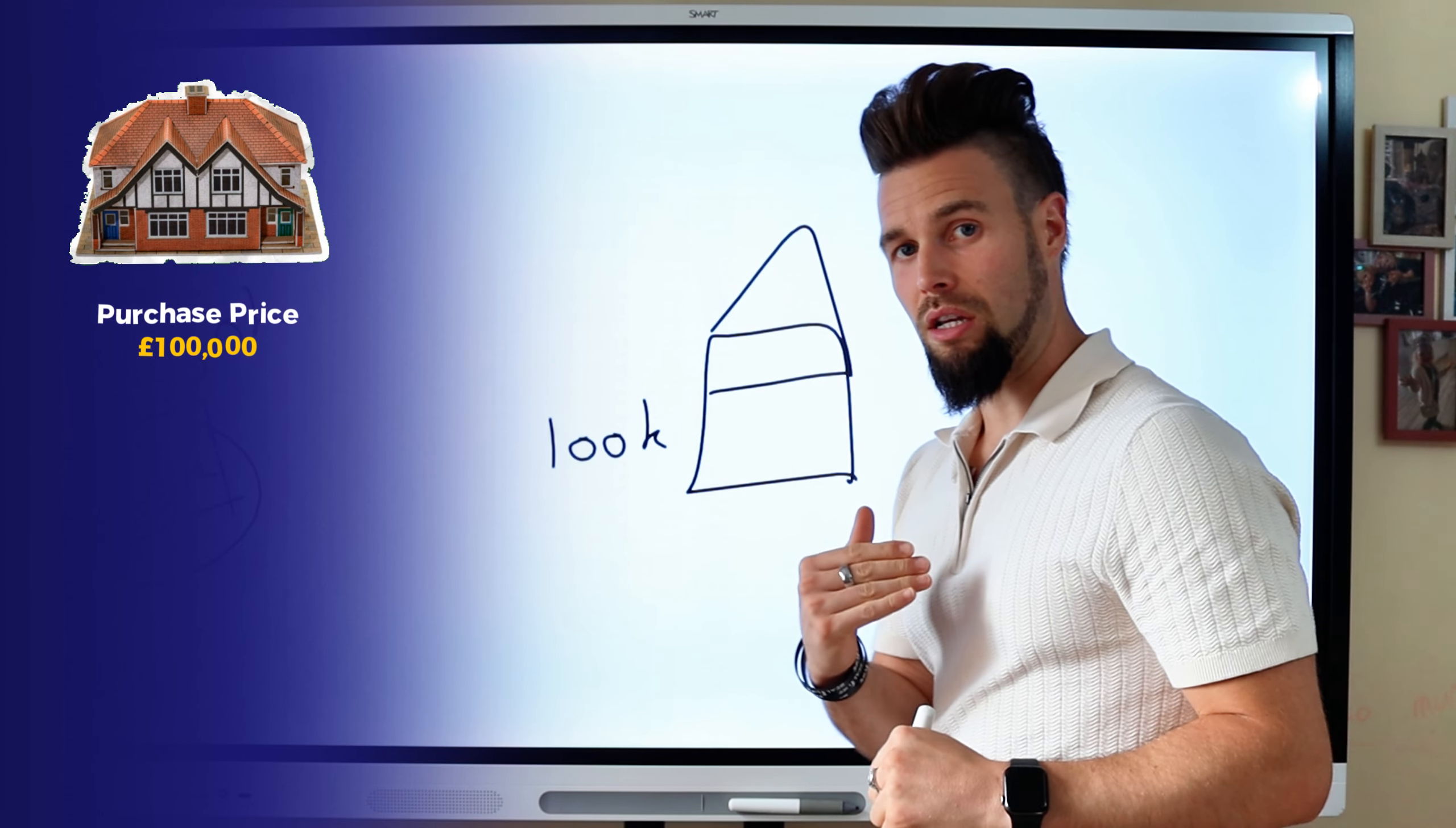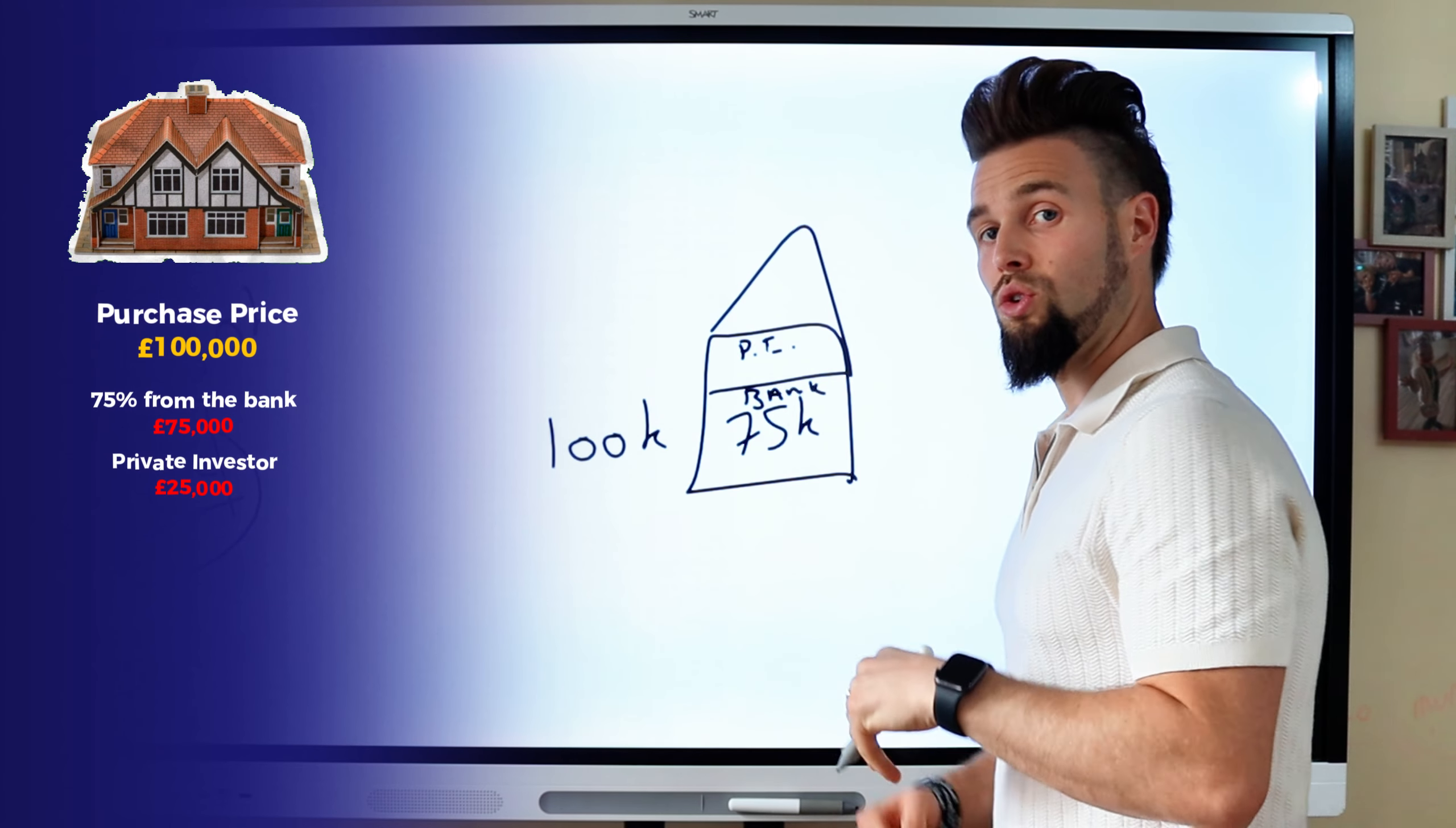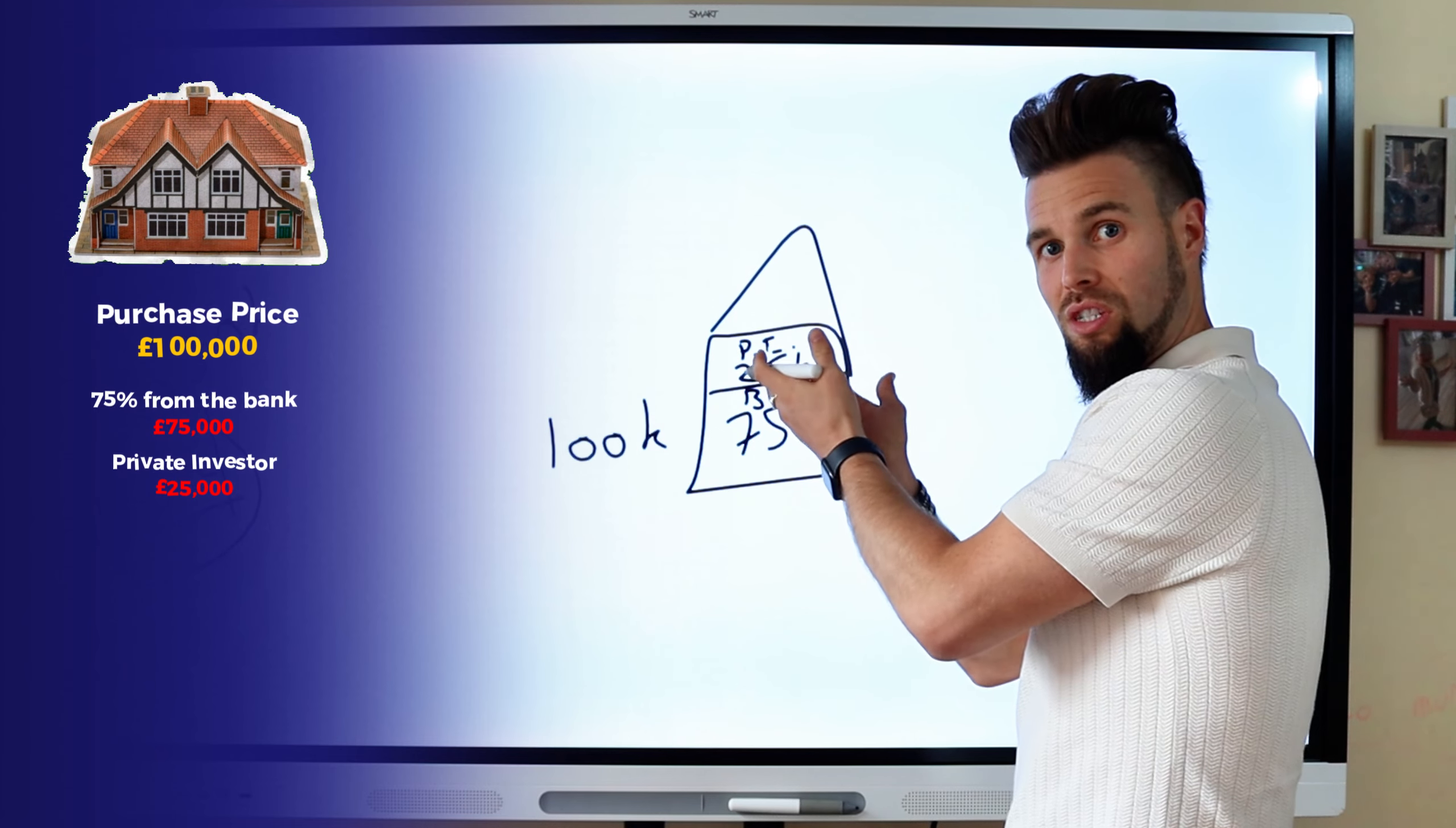So we bought it, renovated it, and then we sell it on. And we sold this for 330,000 pounds. So give or take, we made 40,000 pounds. Now using zero of my own money, what I then did was also brought someone in as a joint venture partner. And we just split this and took 20,000 pounds each. How freaking cool is that? So that's one example.